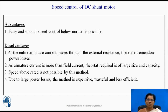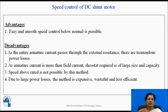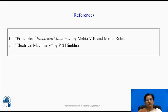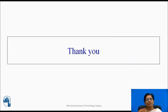Advantages of the armature control method: easy and smooth speed control below normal speed is possible. Disadvantages: as the entire armature current flows through the external resistance, there are tremendous power losses; as armature current is more than field current, the rheostat required is of large size and capacity; speed above rated is not possible by this method; and due to large power losses, the method is expensive, wasteful, and less efficient. You can refer to these books. Thank you.